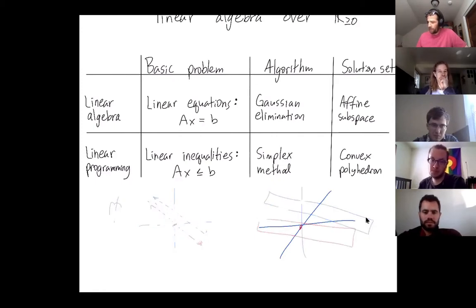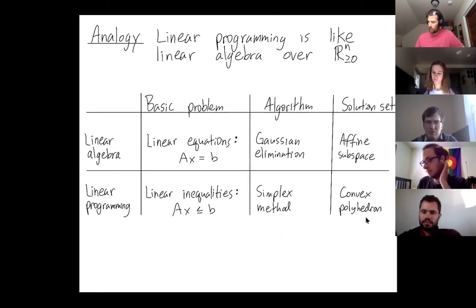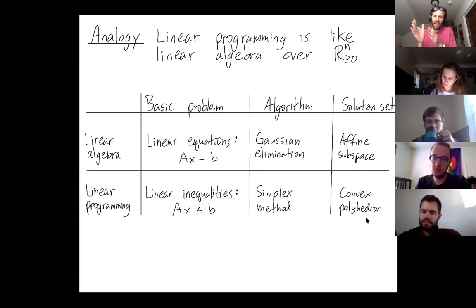For linear programming, the basic problem is to solve an inequality. So Ax is at most a vector b. And this comparison between vectors is entry-wise. So the first entry of Ax has to be at most the first entry of vector b. And same for the second entries and third entries.